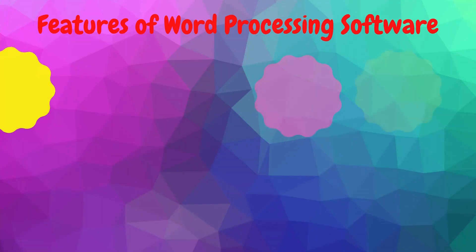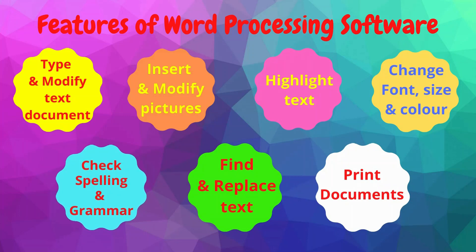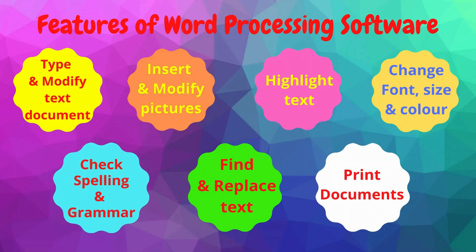Let's talk about some of the features of a word processing software. It helps to create and modify text documents. It allows you to insert and modify pictures. We can change the font size, color, and style. Using a word processor, we can also check for spelling and grammar mistakes in our documents.